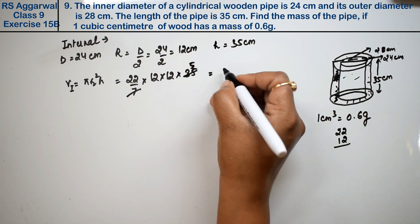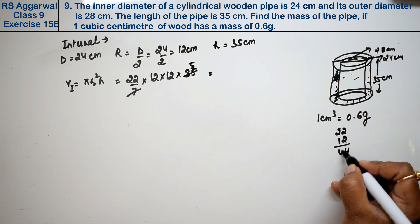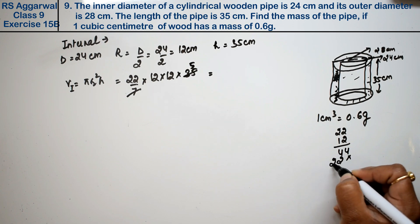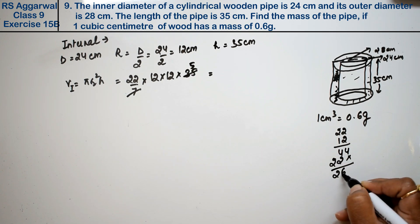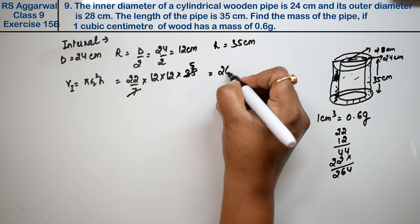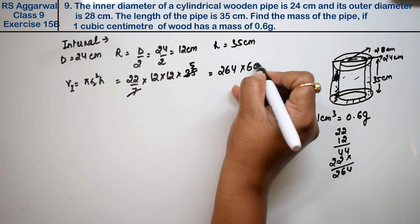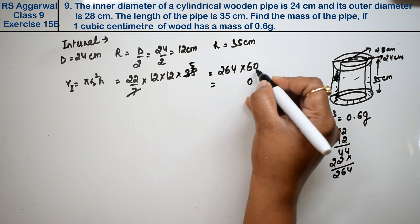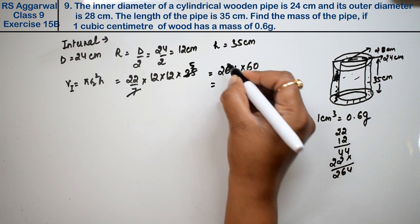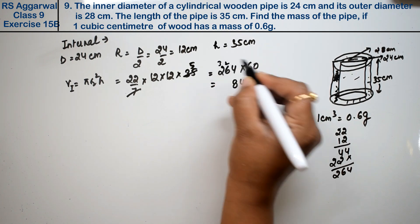See, 7 goes into 35, so this becomes 5. 12 times 5 is 60. Now 22 into 12, this one, and into 60 we'll do. 2 twos are 4, 2 twos are 4, 2 and 2, so this becomes 264. 264 into 60.